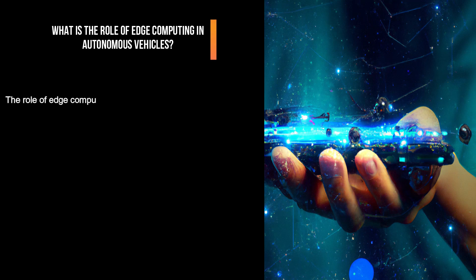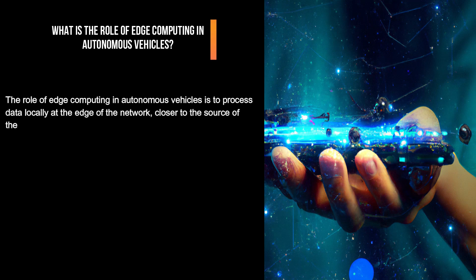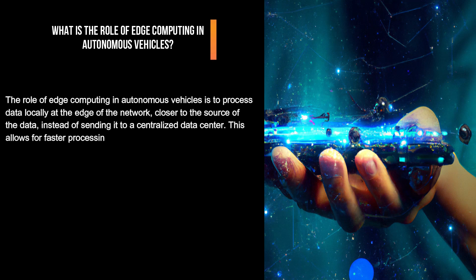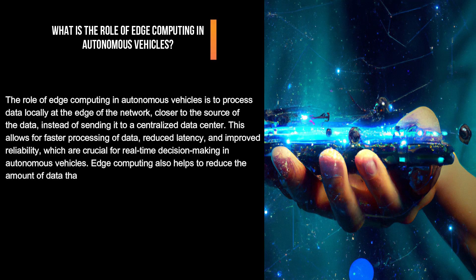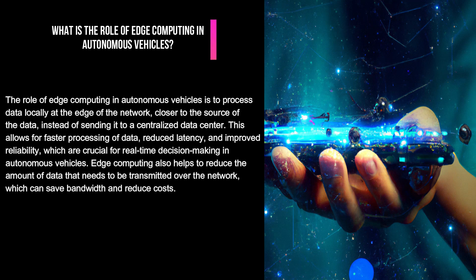What is the role of edge computing in autonomous vehicles? The role of edge computing in autonomous vehicles is to process data locally at the edge of the network, closer to the source of the data, instead of sending it to a centralized data center. This allows for faster processing, reduced latency, and improved reliability, which are crucial for real-time decision-making in autonomous vehicles. Edge computing also helps reduce the amount of data transmitted over the network, saving bandwidth and reducing costs.